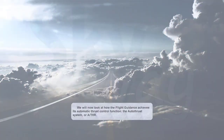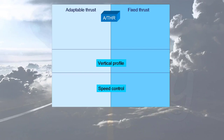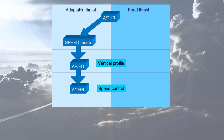We will now look at how the flight guidance achieves its automatic thrust control function: the autothrust system. The autothrust can work in two different modes. In speed mode, the autothrust continuously adjusts the thrust in order to maintain a target speed or Mach, for example during cruise or approach.